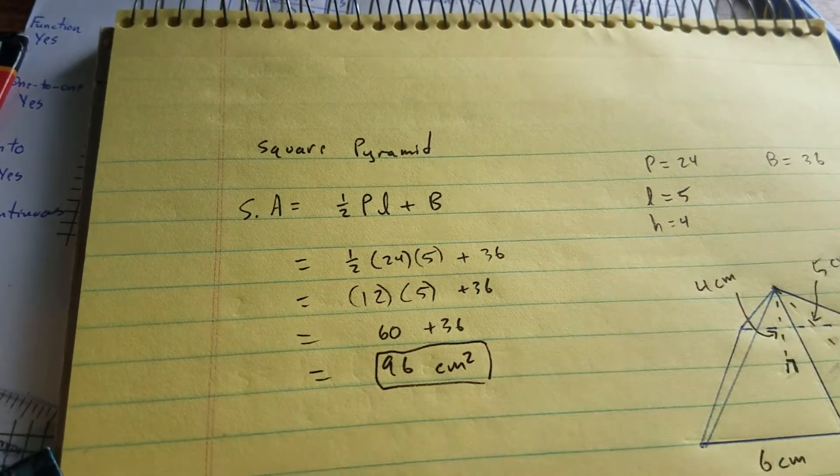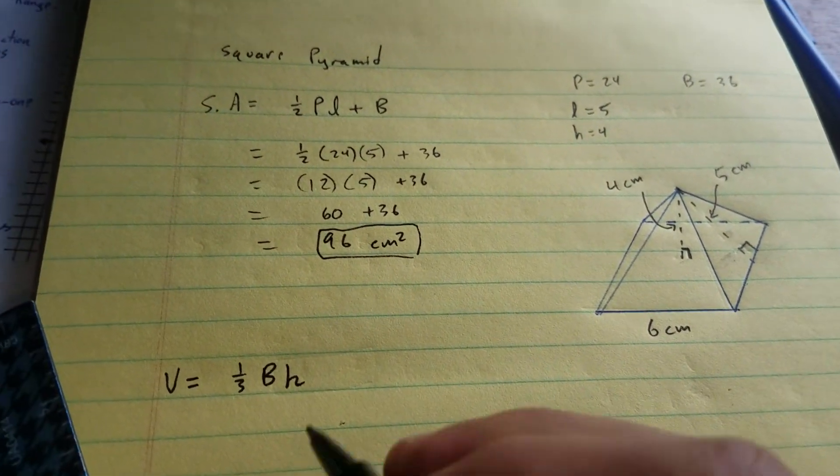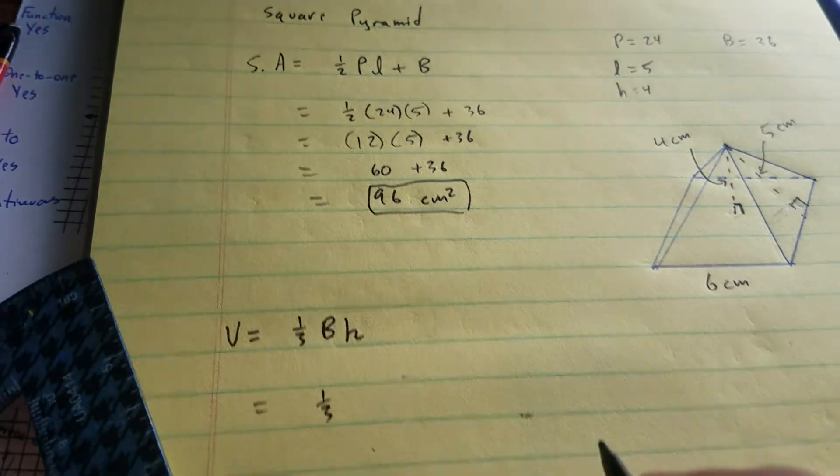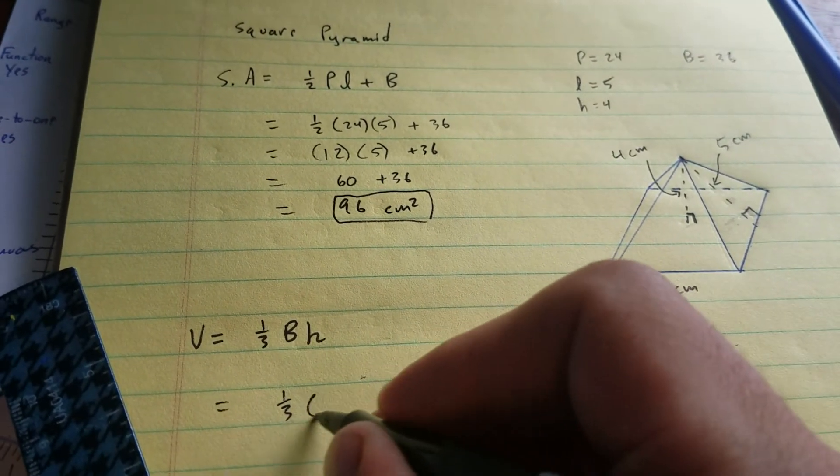And volume: one-third times base times height, or one-third times the area of the base, which is 36, times the height.